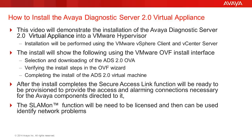After the install completes, the Secure Access Link function will be ready to be provisioned and to provide services for the Avaya components directed to it. The SLA Mon function can be used to identify network issues with its network monitoring capabilities.